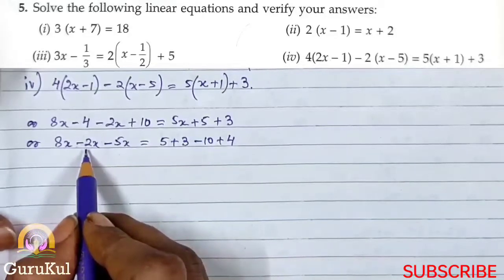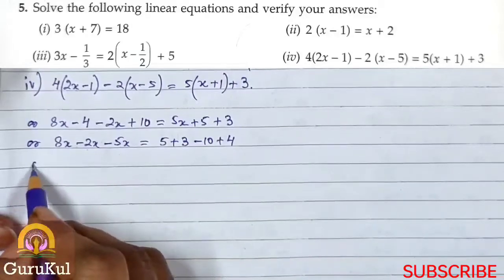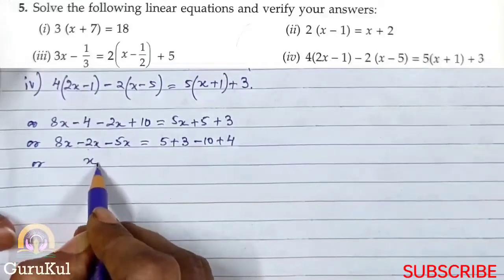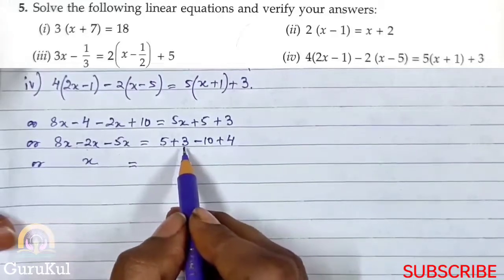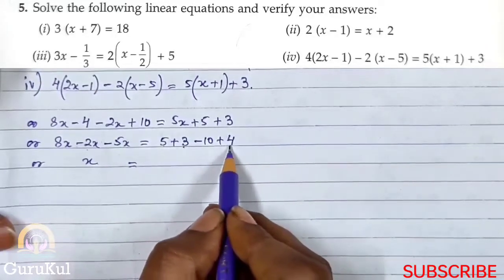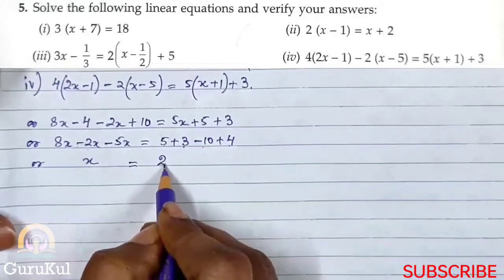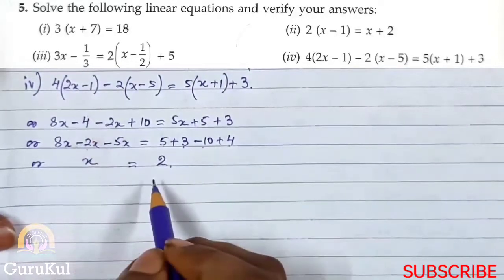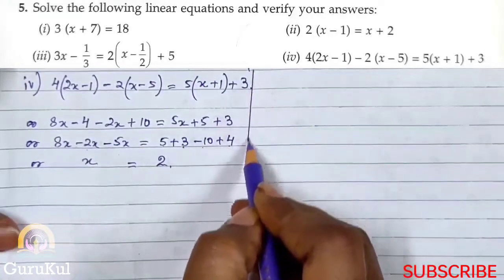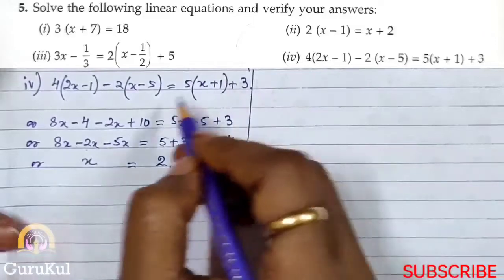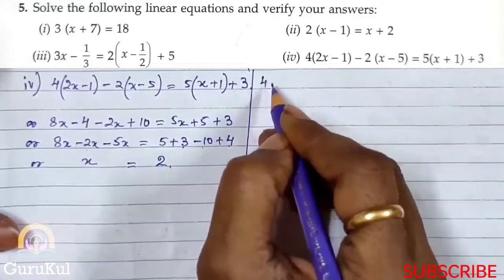So 8 minus 2 is 6, and 6 minus 5 is 1, giving x is equal to 5 plus 3 is 8, plus 4 is 12, minus 10 is 2. So x equals 2. Now we will place this value back into the equation and verify.